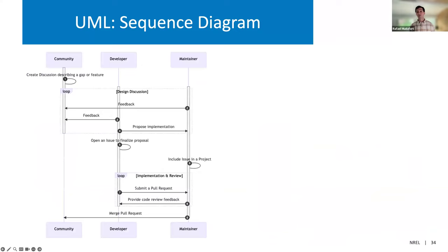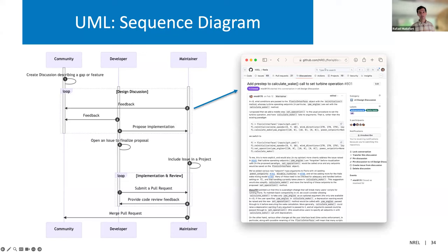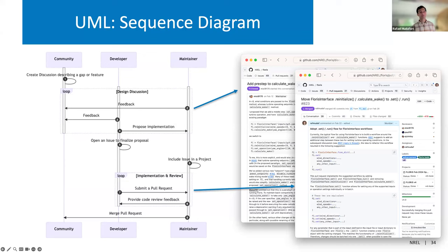While sequence diagrams are extremely useful for the software itself, the processes around the software are also important to define and can be expressed with these diagrams. I use this one in the developer's guide for one of my projects — it illustrates the process and expectations that the core development team has for external contributors. I've listed community developer and maintainer as actors, and each step relates to a concrete thing that should happen along the development process, such as creating a design document on GitHub Discussions or submitting a pull request for code review. It has been helpful to set these expectations ahead of time, and by putting it in a diagram instead of in words, it allows external contributors to have a visual map of where they are within the process.